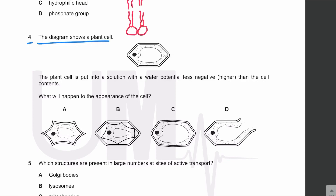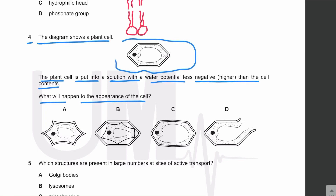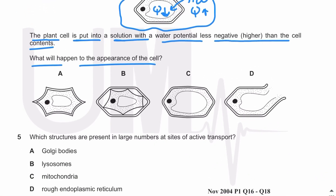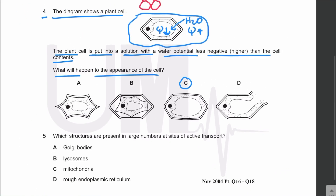The diagram shows a plant cell placed into a solution with a water potential less negative or higher than the cell contents. What will happen to the appearance of the cell? The cell has a lower water potential, so water will enter by osmosis and the cell will become turgid. The vacuole will enlarge and the cell wall will thin out slightly. The cell will not burst due to the cell wall, and states A and B show plasmolysis.